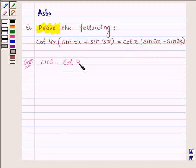So left hand side is cot 4x into sin 5x plus sin 3x. Now cot 4x is cos 4x upon sin 4x.